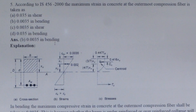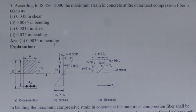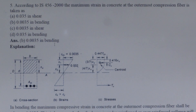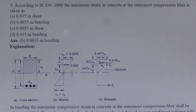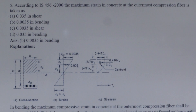Next question from IS 456-2000: The maximum strain in concrete at the outermost compression fiber. As per the basic assumption of limit state method design for flexure, the maximum compressive strain in concrete at the outermost compression fiber shall be taken as 0.0035 in bending. The maximum compressive strain in concrete under axial compression is taken as 0.002.